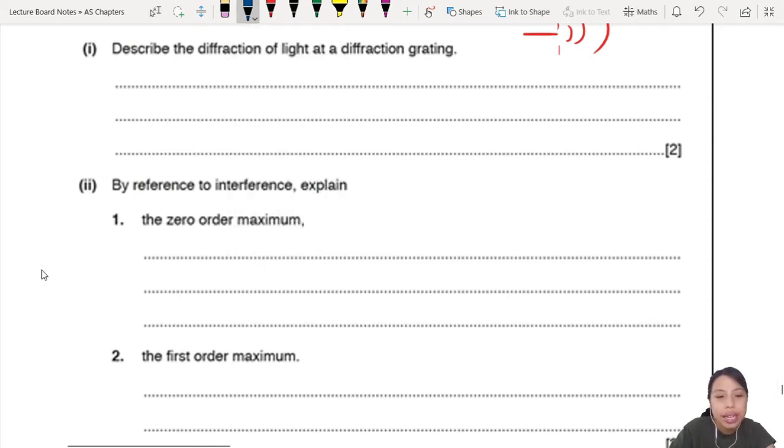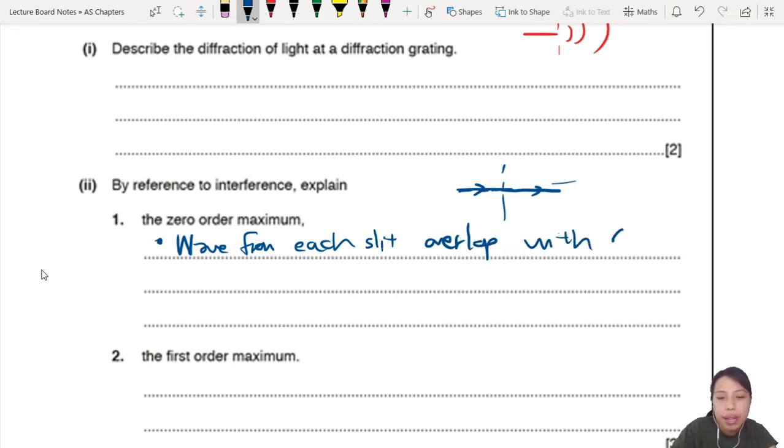Zero order maximum - the light comes in, all the same path difference, so all the lambdas are the same, all the colors of the rainbow. You want to describe waves from each slit overlap or superpose with same path difference.